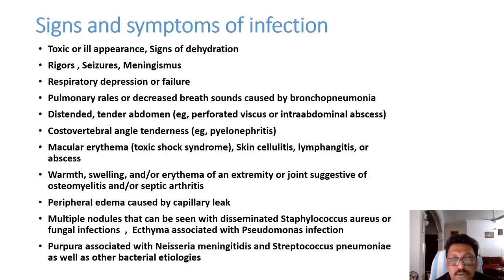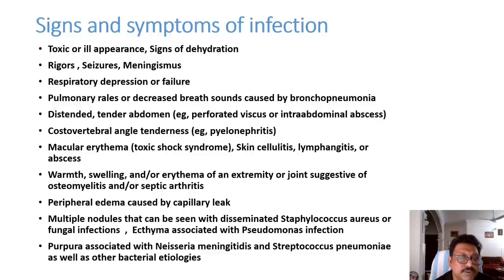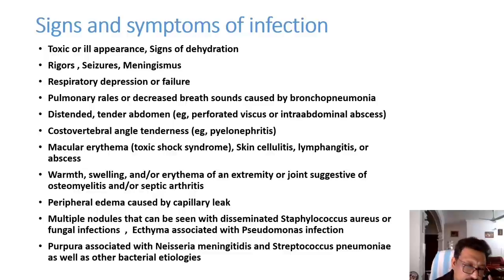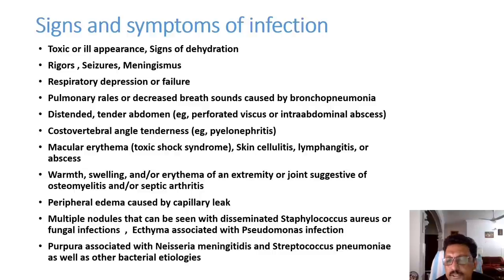Multiple nodules may indicate disseminated fungal infection. Purpuric rashes can be produced by organisms like Neisseria and Streptococcal pneumoniae. These are the common signs and symptoms of infection. If a patient presents with fever and any sign of infection along with hypotension, you must suspect sepsis and septic shock.